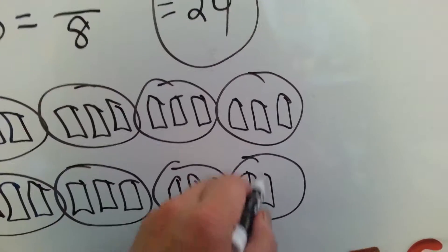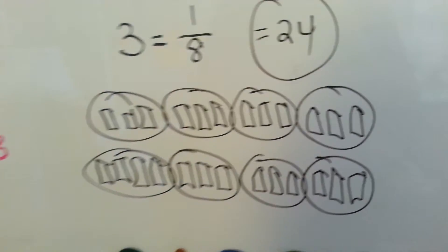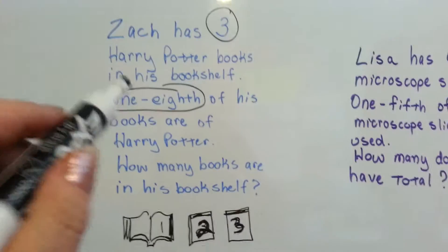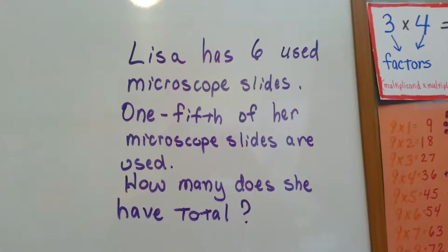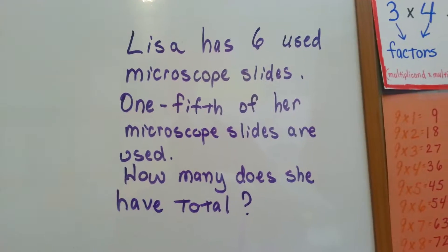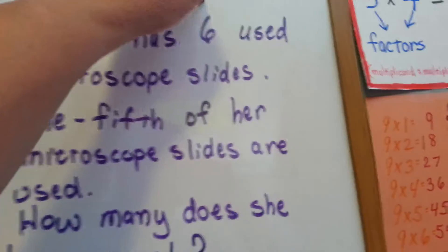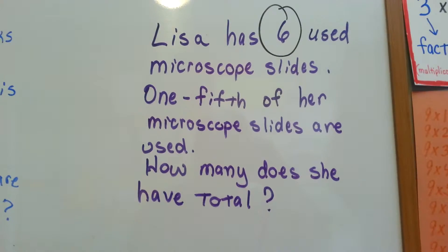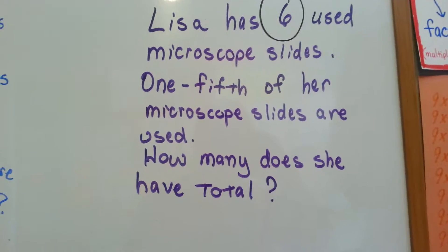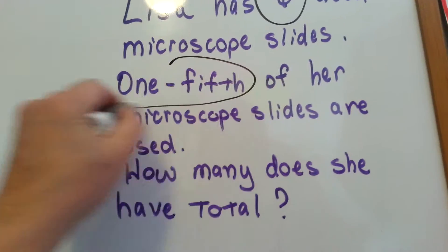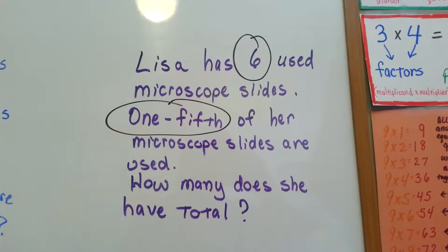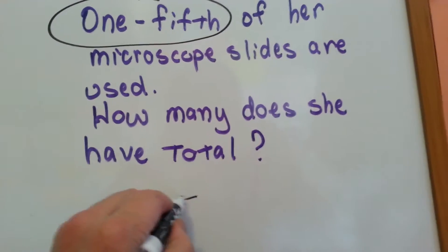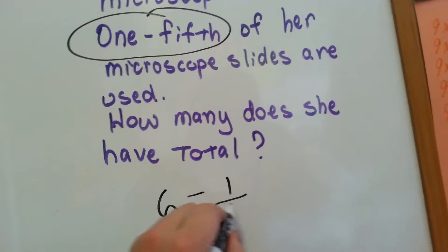You can either draw pictures to help you figure it out, but you should always underline or circle the important parts of the word problem. Let's try another one. Lisa has six used microscope slides. So we know six is going to be important. One-fifth of her microscope slides are used. So how many does she have total? New and used. Well, six is equal to one-fifth.